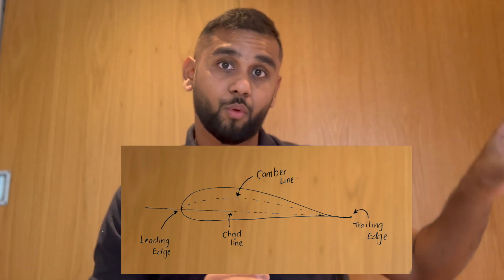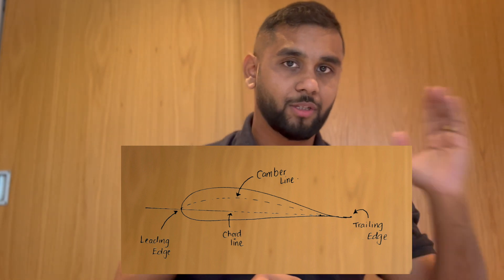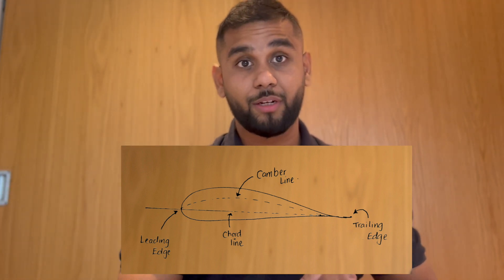You can't apply Bernoulli's theorem to a moving object or an airplane without an aerofoil. The front part of the aerofoil is called the leading edge, the rear part is called the trailing edge. Now we'll see how we can bring an aerofoil and Bernoulli's theorem together to understand this magical thing called lift. Bernoulli said: pressure increases, velocity decreases; velocity increases, pressure decreases.